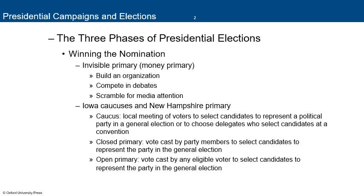Then you run for caucuses. The Iowa caucus and New Hampshire primary are the first two general caucus elections. A caucus is a local meeting of voters to select candidates to represent a political party in a general election or to choose delegates who select candidates at a convention — a very democratic process where you literally stand on one side of the room or raise your hand in support of your candidate. Closed primaries require you to declare your party prior to the primary; open primaries allow any eligible voter to participate.